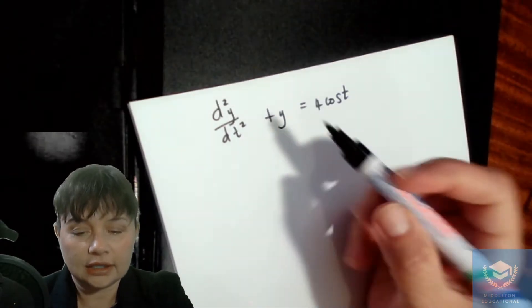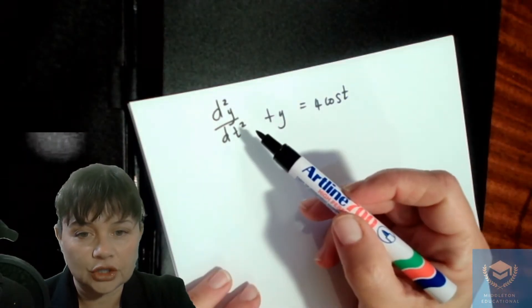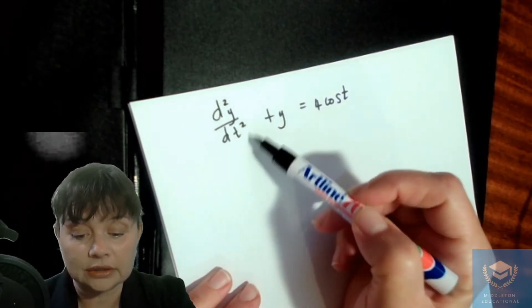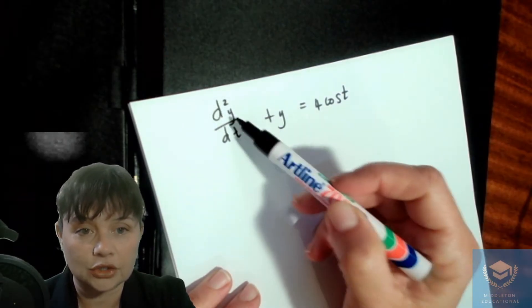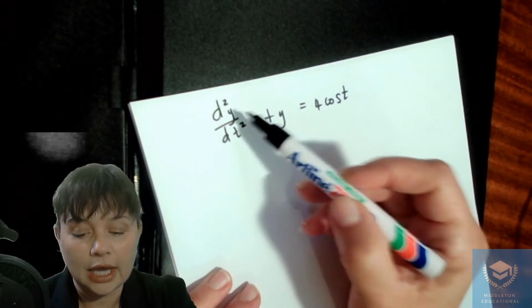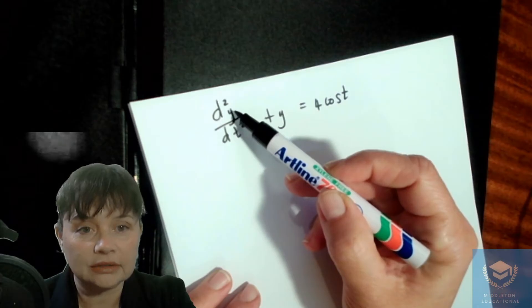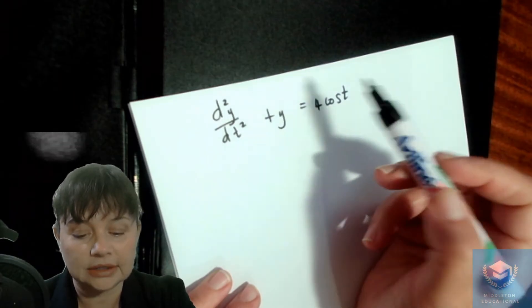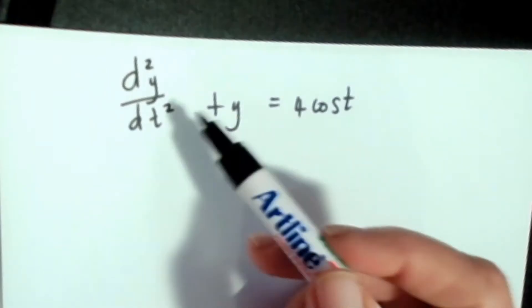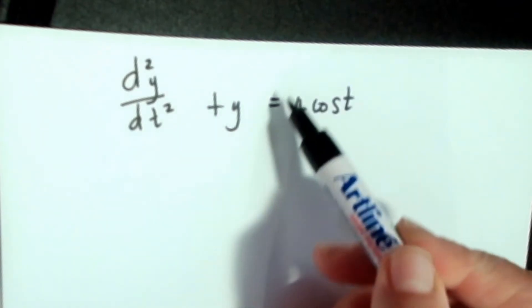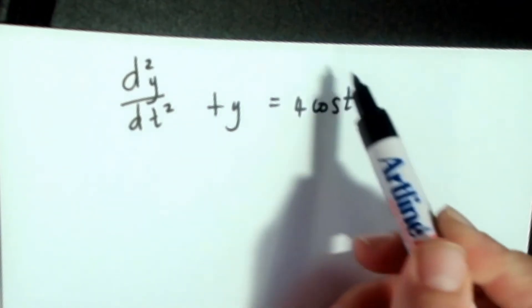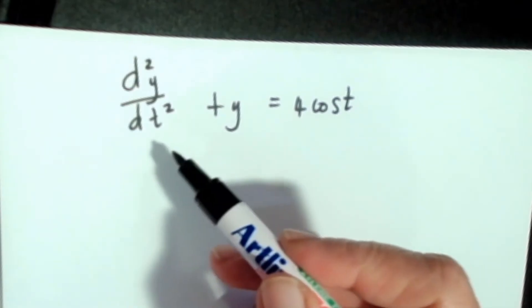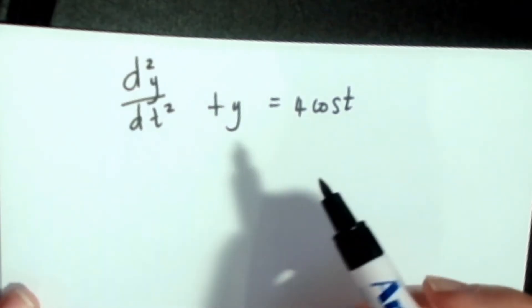So we have here a second-order differential equation — you know it's second order because the highest derivative in the equation is to the power 2. Our dependent variable in this case is y, and the independent variable is t. You know it's non-homogeneous because it's equal to some function, so we have to solve for this differential equation.